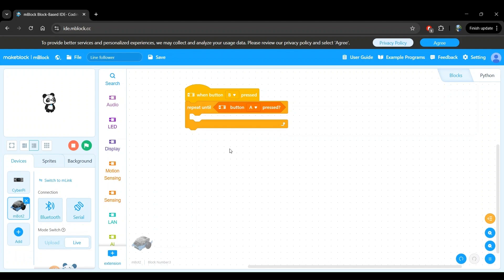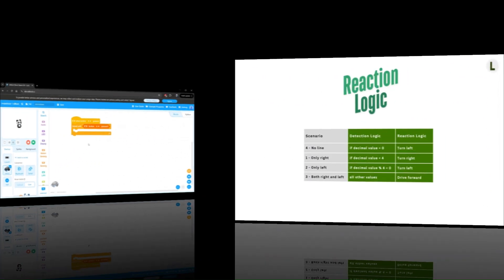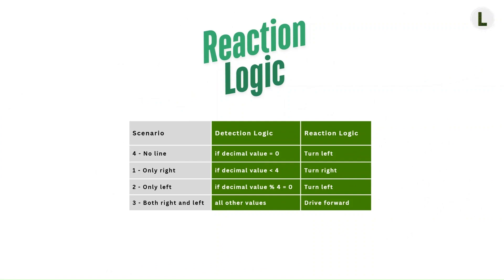Now let's define the actions that we want to repeat as long as the program is active. We are now going to define the core logic of our program, and for that we will refer to the detection and reaction logic table from our previous tutorial. If you're wondering how we got this table, I've explained this in my previous tutorial. I'll add a link to that video in the description if you want to check that out.